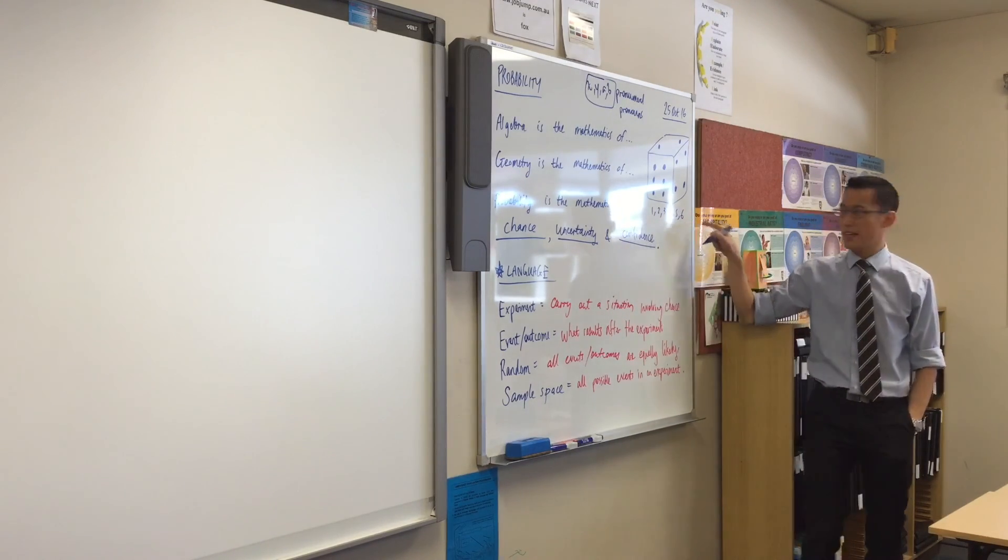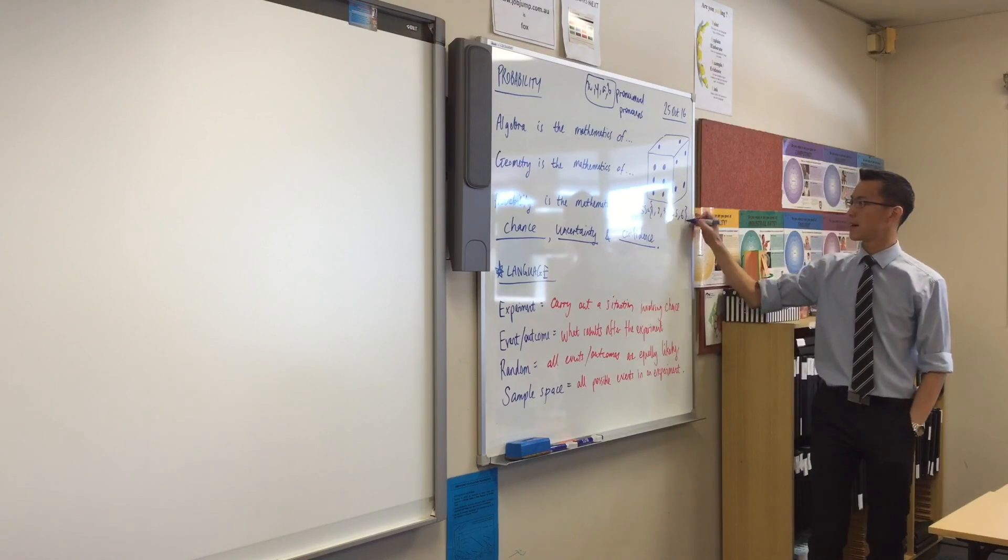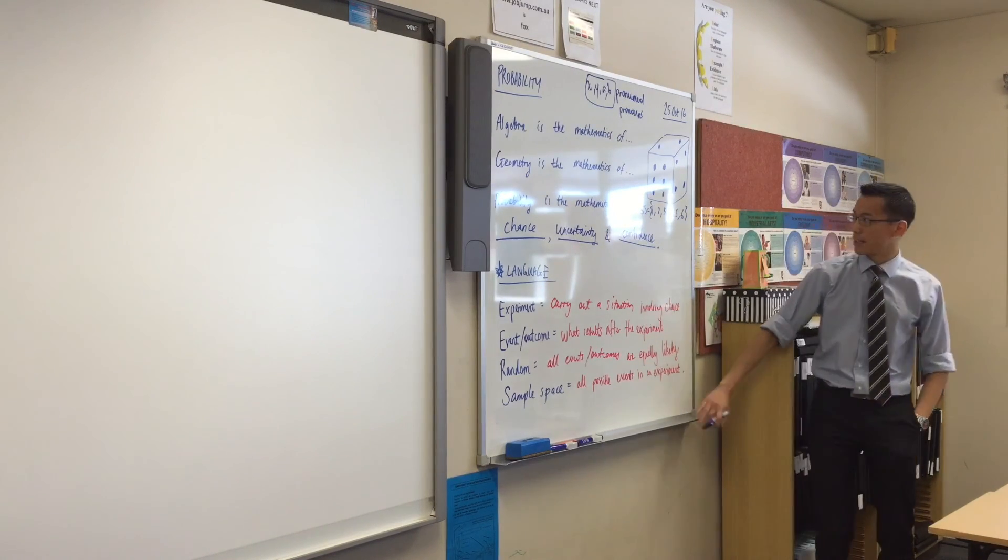So, one, two, three, four, five, six. That's the sample space for rolling a die. Right? That's the sample space for rolling a die.